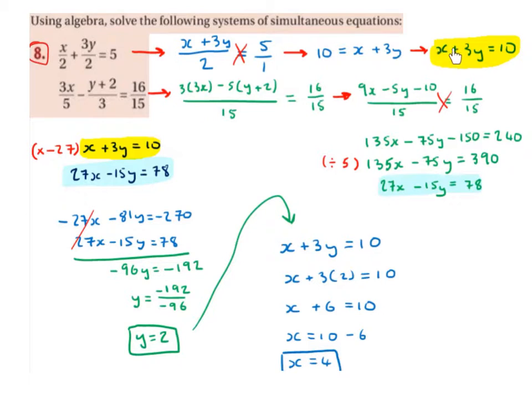So I have x plus 3y is equal to 10 because I want my x and my y on the left and my constant on the right. So now I have one equation.